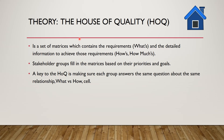The theory is that the house of quality is a set of matrices which contains the requirement — what — and the detailed information of achieving those requirements — how and how much. The key to HOQ is making sure each group answers the same question about the same relationship: the what versus how cell.